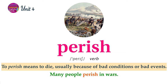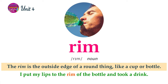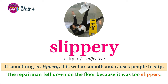To perish means to die, usually because of bad conditions or bad events. Many people perish in wars. A pit is a big hole in the ground. Michael fell into the pit and needed some help to get out. The rim is the outside edge of a round thing, like a cup or bottle. I put my lips to the rim of the bottle and took a drink. A roost is a place where birds can land and rest or sleep. The family of doves made a roost at the top of the tree. If something is slippery, it is wet or smooth and causes people to slip. The repairman fell down on the floor because it was too slippery.